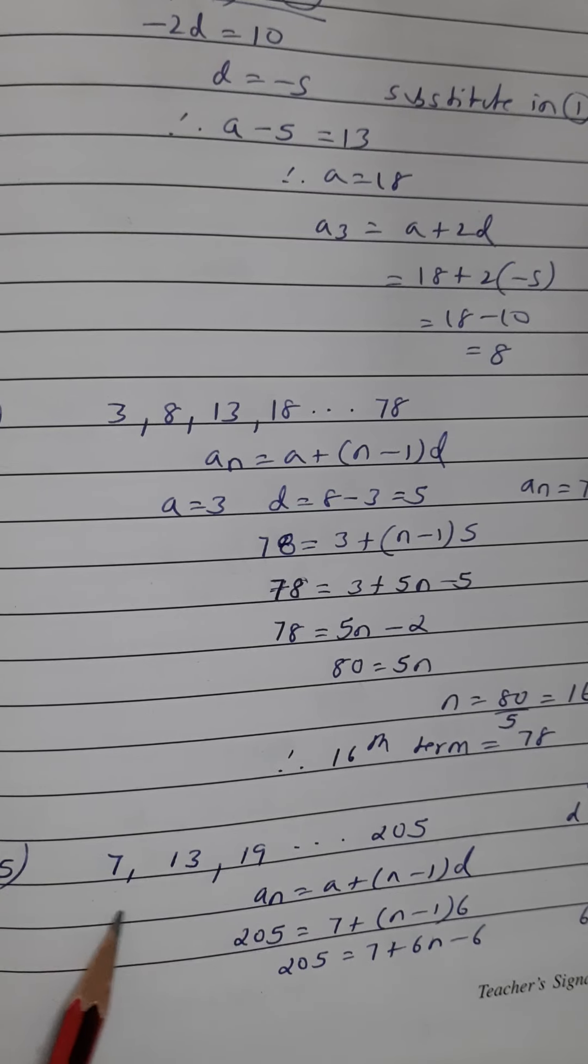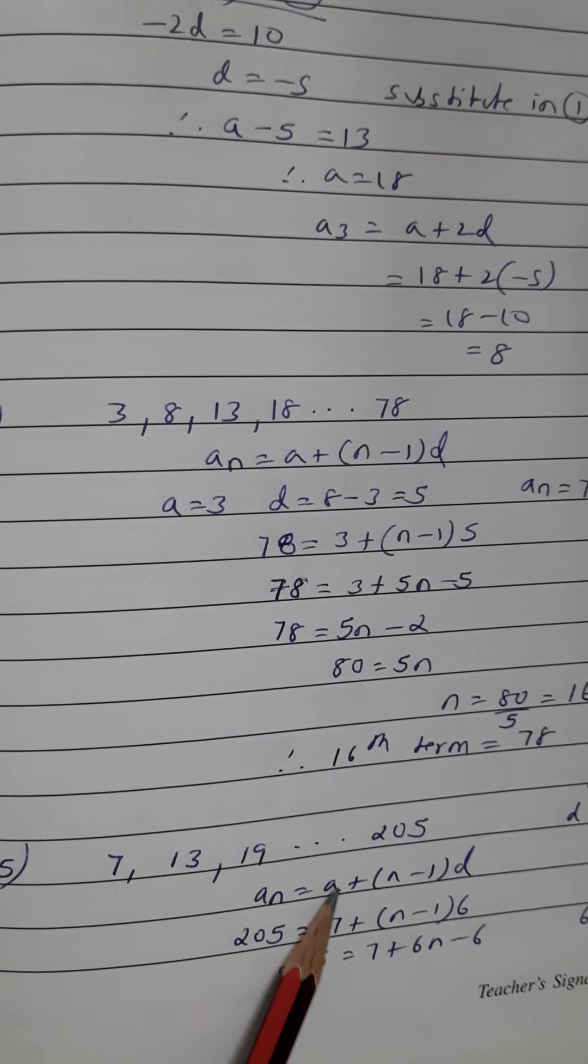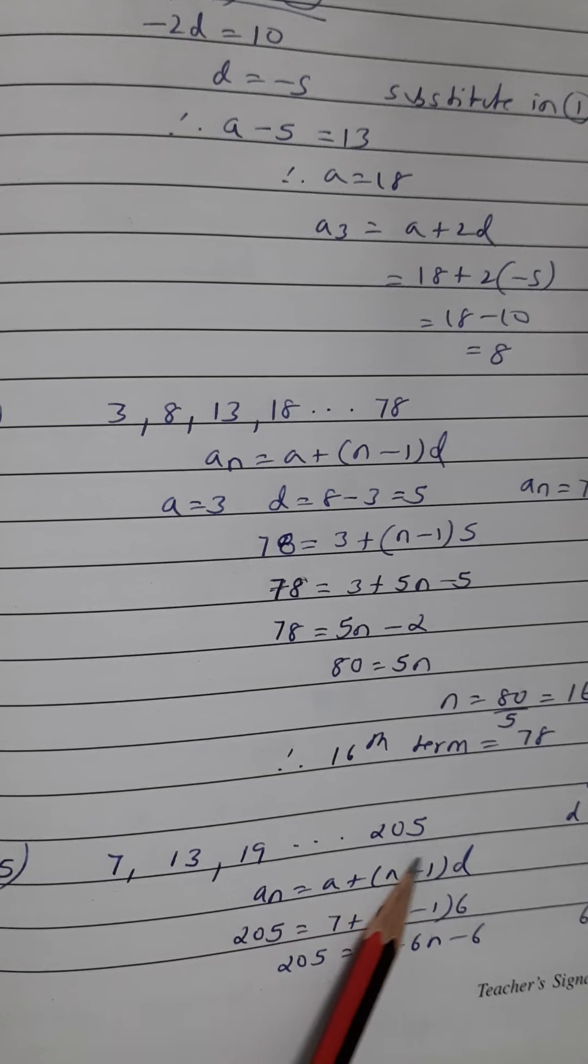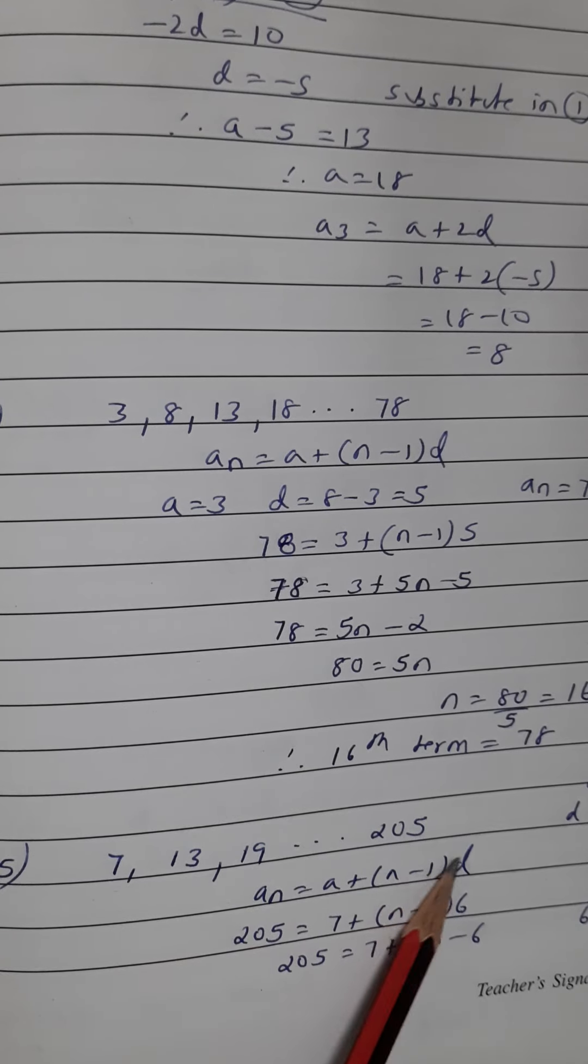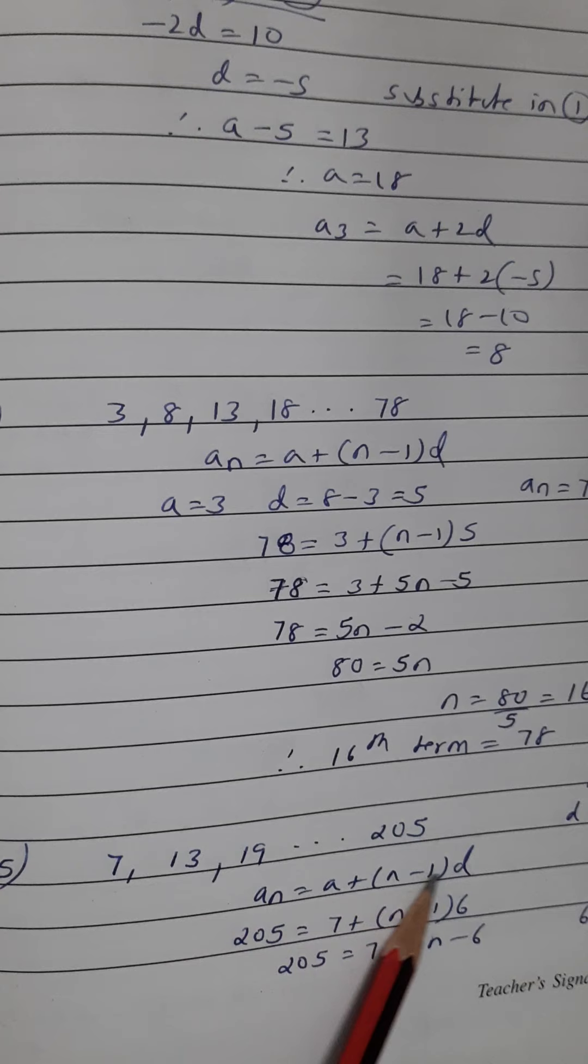So in all these questions we are using only one formula: a_n is a plus n minus 1 d. So please memorize this, write it down few times so that you get the hang of it, okay?